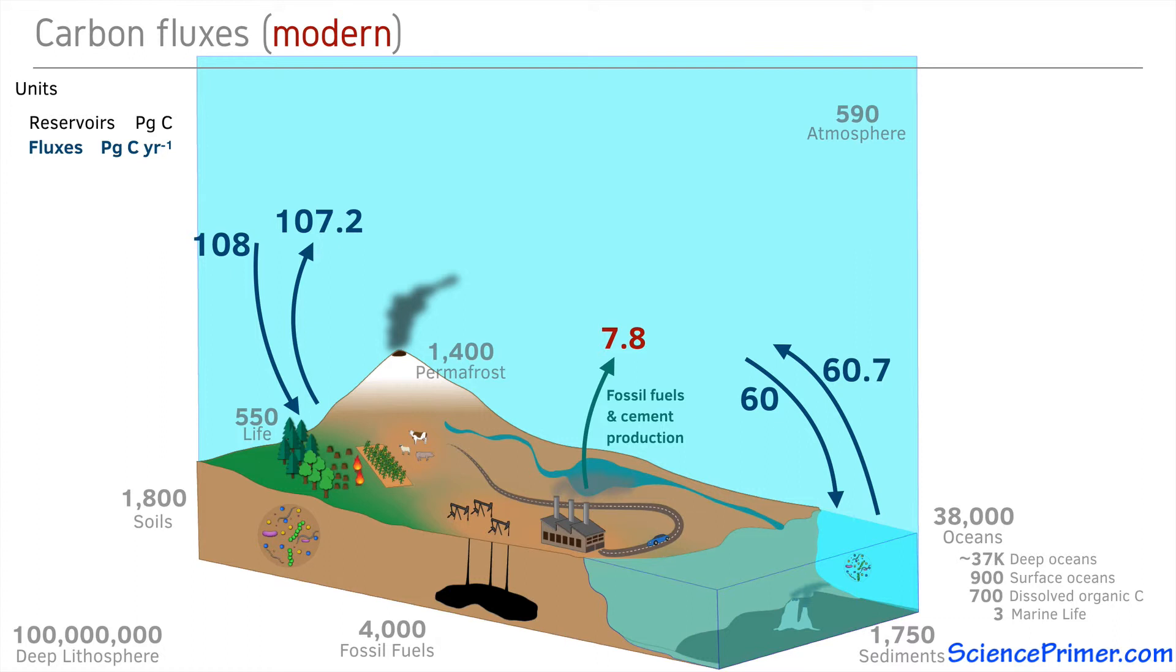In addition to this transfer, land use changes driven by human activity is causing an additional annual flux of about 1.1 petagrams of carbon from soils to the atmosphere. These transfers have led to an increase in the amount of carbon in the atmosphere from around 590 to over 800 petagrams of carbon and a decrease in the amount of carbon found in the fossil fuel reservoir.